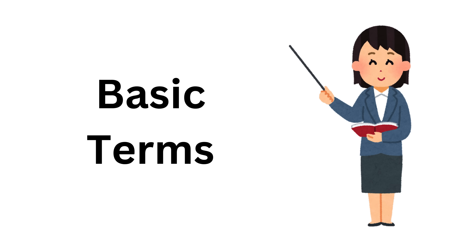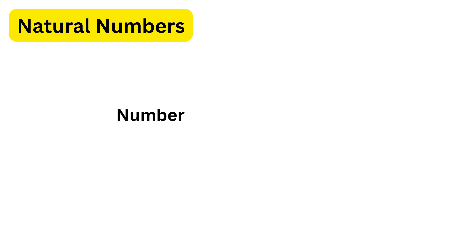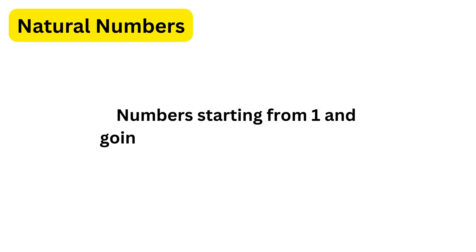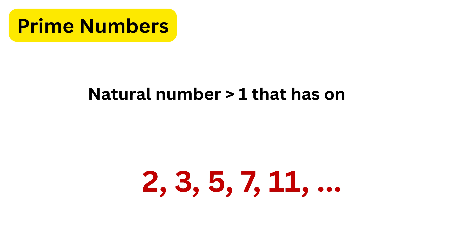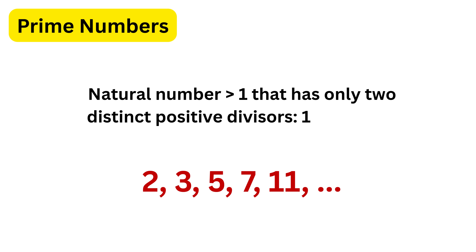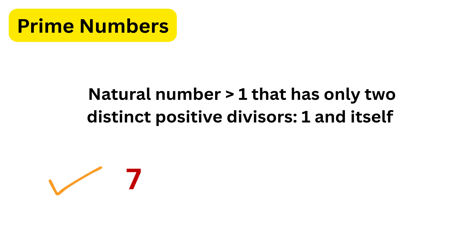Let us start with some basic terms. Natural numbers are the numbers starting from one and going on forever, like one, two, three, four, and so on. A prime number is a natural number greater than one that has only two distinct positive divisors: one and itself. For example, seven is a prime number.